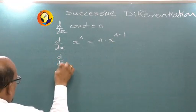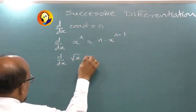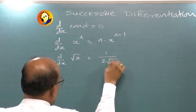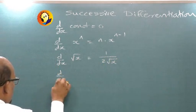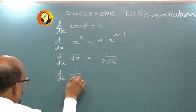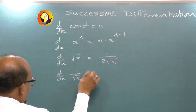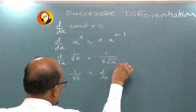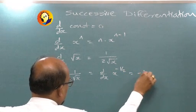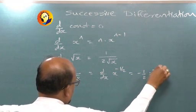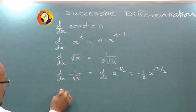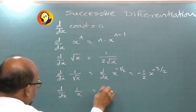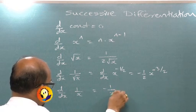d by dx of root x is 1 upon 2 root x. d by dx of 1 upon root x is actually d by dx of x raised to minus half, which is minus half x raised to minus 3 by 2. d by dx of 1 upon x is minus 1 upon x square.